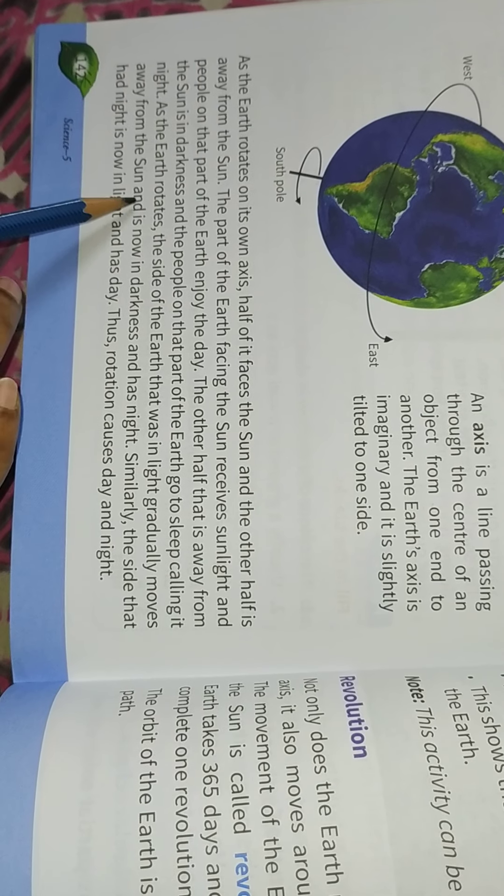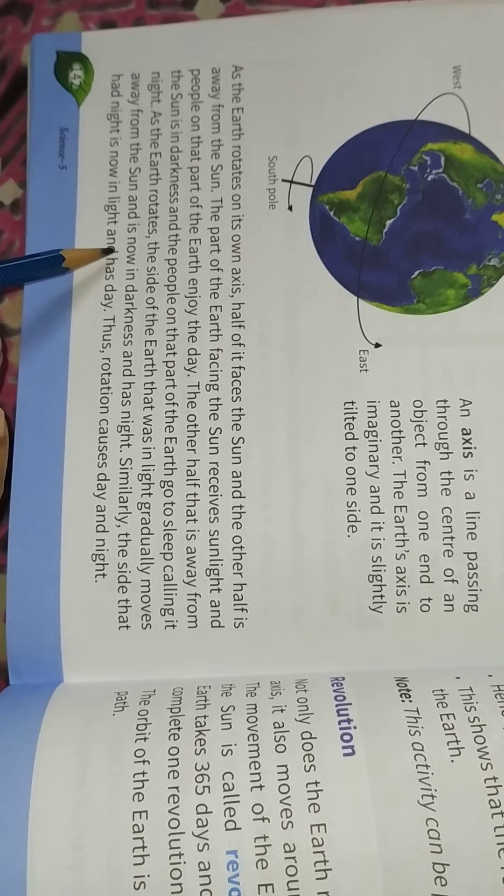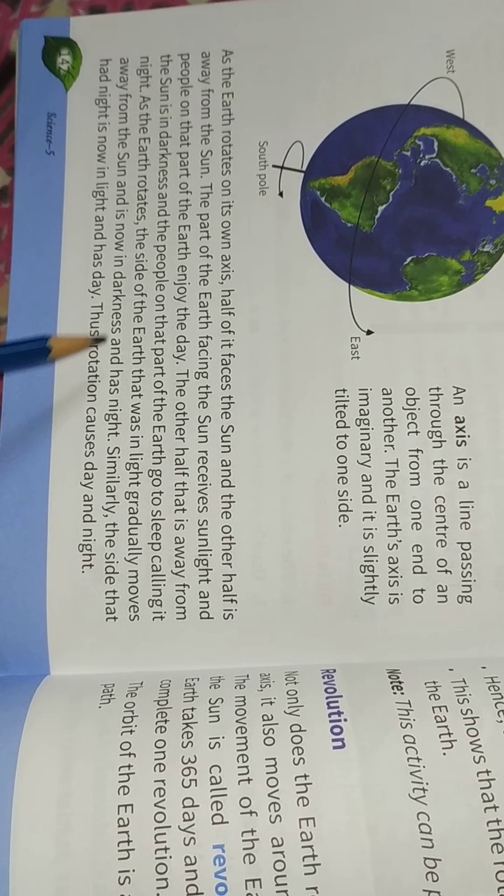As the Earth rotates, the side of the Earth gradually moves away from the sun and experiences darkness and is known as night.